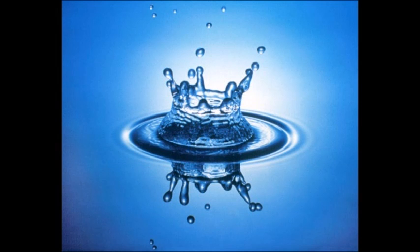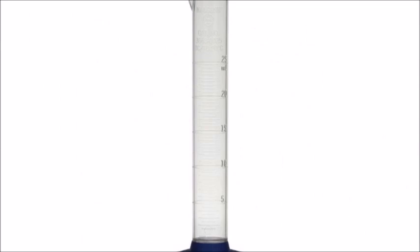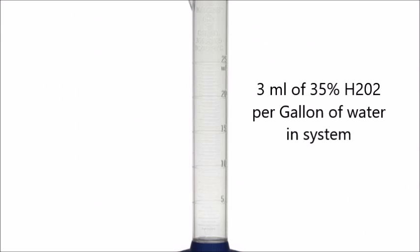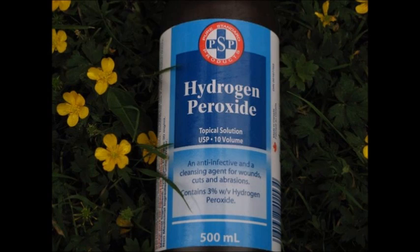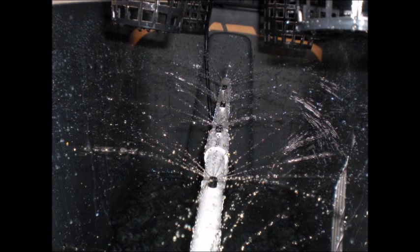Next, you add your 35% hydrogen peroxide to the water. You only need to add 3 milliliters of it for every gallon of water that you have. That means if you went with a 3% H2O2, you'll need to add about 30 milliliters of it per gallon. Now that this diluted solution of water and H2O2 is in your system,